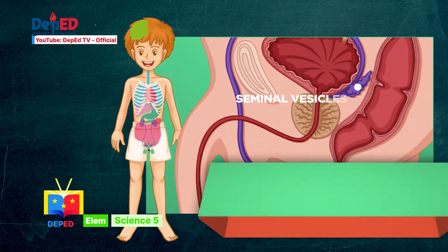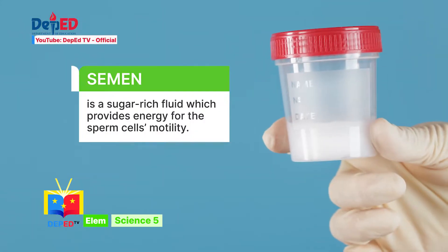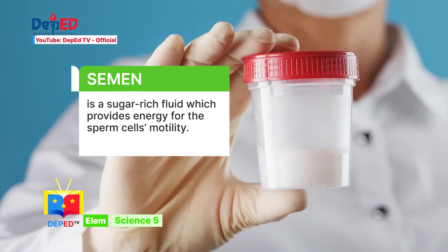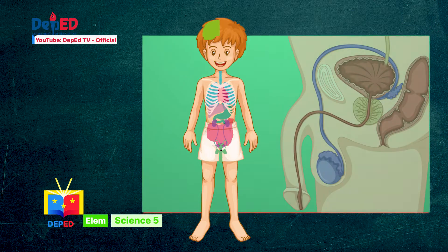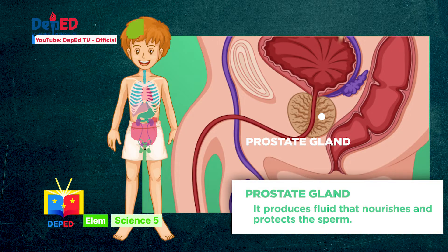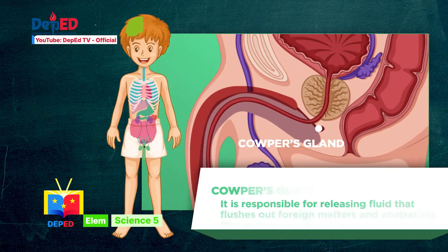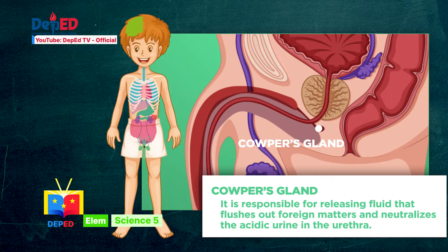Number 4: Seminal vesicle. Seminal vesicles are sac-like pouches attached to the vas deferens. It contributes to semen production. Semen is a sugar-rich fluid which provides energy for the sperm cell's motility. Number 5: Prostate gland. The prostate gland is located between the bladder and the penis. It produces fluid that nourishes and protects the sperm. Number 6: Cowper's gland. Cowper's gland is one of two pea-sized organs found beneath the prostate gland. It is responsible for releasing fluid that flushes out foreign matter and neutralizes the acidic urine in the urethra.